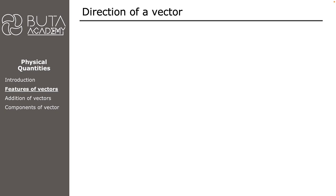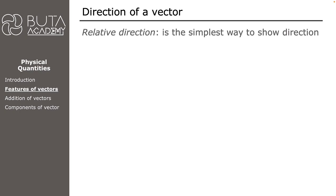There are different methods to describe the direction of a vector. In this video we will learn three of them. The first and simplest is relative direction — the direction of a vector may be to the right, to the left, upwards, or downwards.